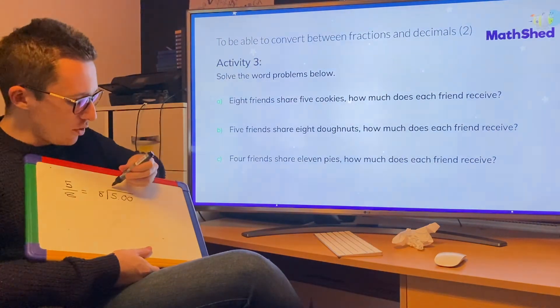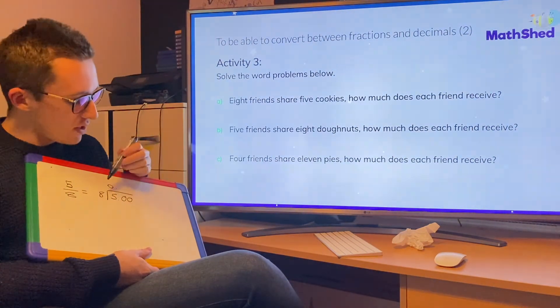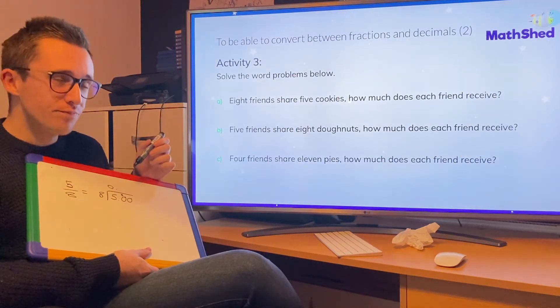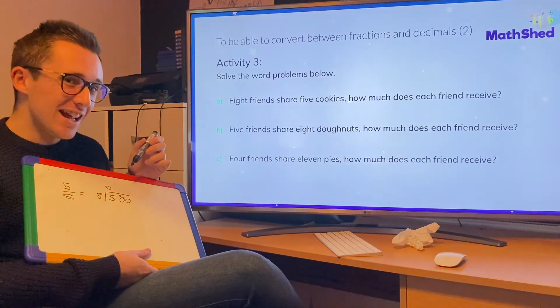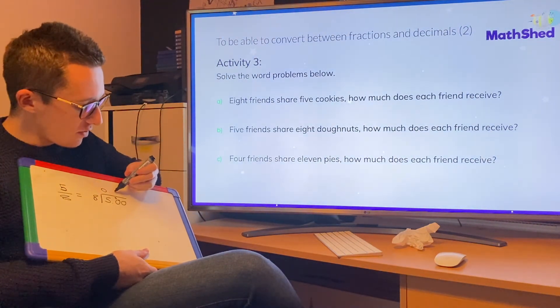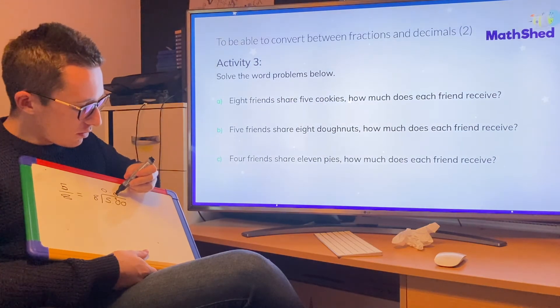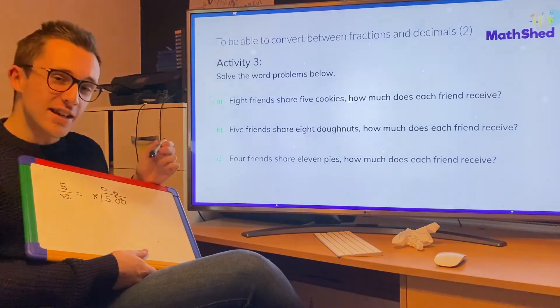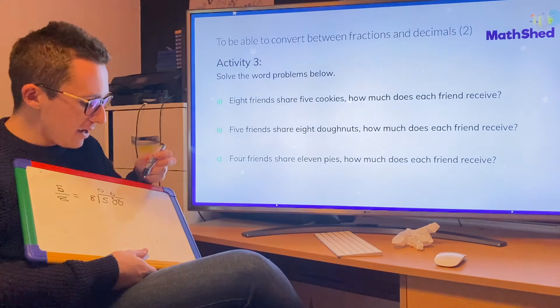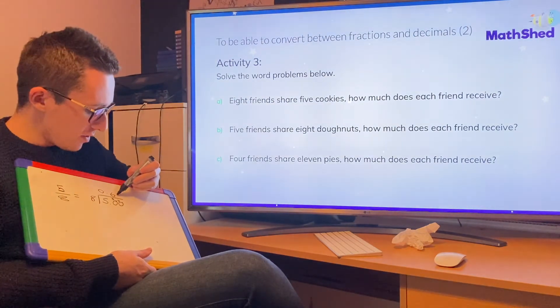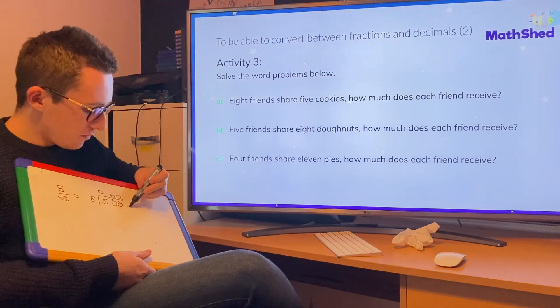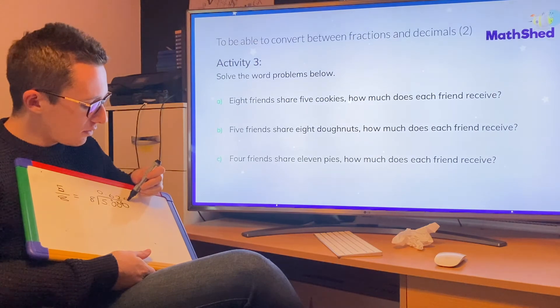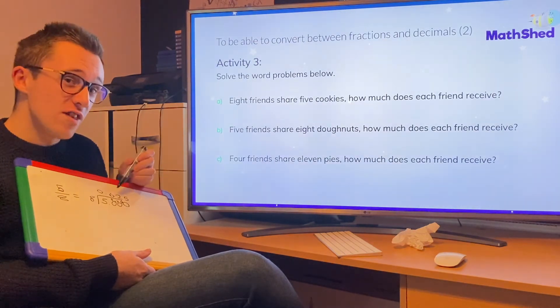Eight into five doesn't go, so I put zero and I carry the five over. Eight into 50 doesn't quite go, but I can get close because I know that eight times six is 48, with two left over. I can now do eight into 20. Again, I can't quite get there, but I can nearly get there. If I times it by two, I get 16, which leaves me with four left over. Eight goes into 40 five times. So my answer is 0.625.